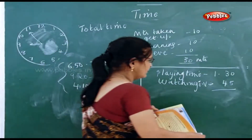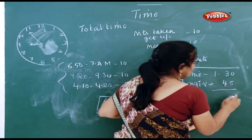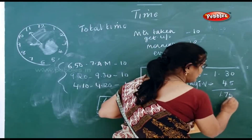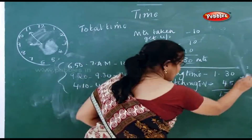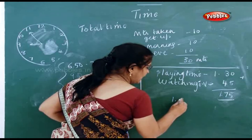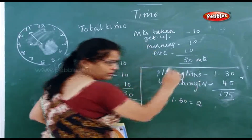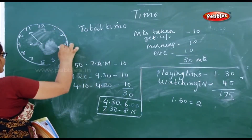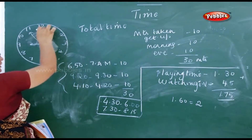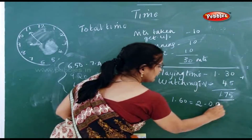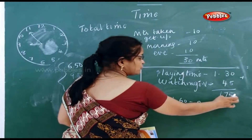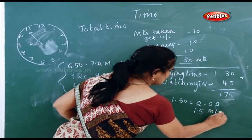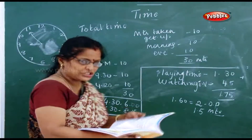When you add 1 hour 30 minutes and 45 minutes, you get 1 hour 75 minutes. Now, 75 minutes means 60 minutes goes to make another hour (bringing it to 2 hours), and the remaining is 75 minus 60 = 15 minutes. So the answer is 2 hours and 15 minutes taken for playing and watching TV.